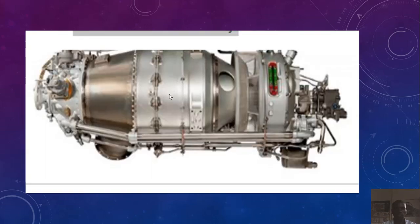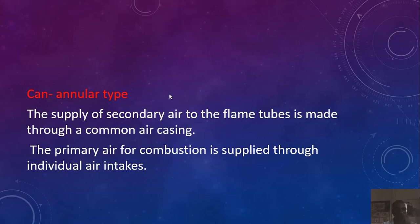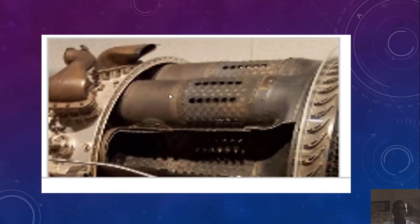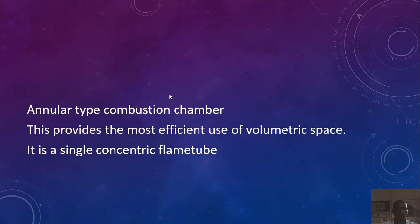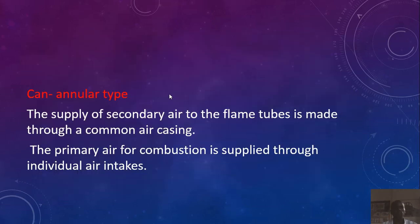That is the annular or basket type combustion chamber. Moving to the can annular, which is a combination of all of these. The supply of secondary air to the flame tubes is made through a common air casing, and primary air for combustion is supplied through individual air intakes — that is what is special about the can annular.